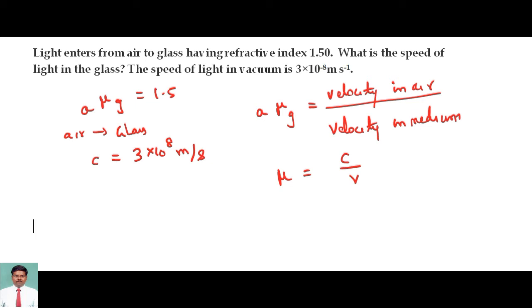So rearranging this, v is equal to c by mu. So c is equal to 3 into 10 power 8, and mu is equal to 1.5.